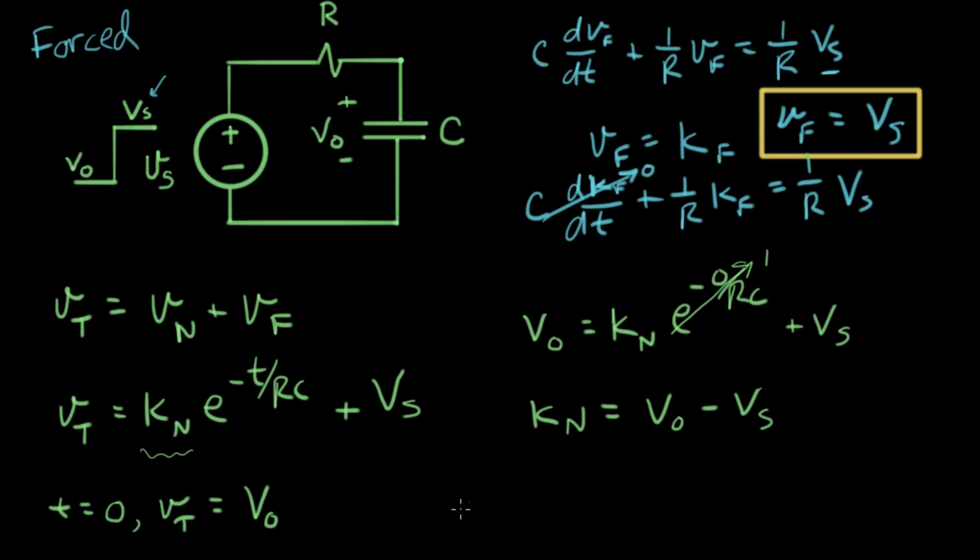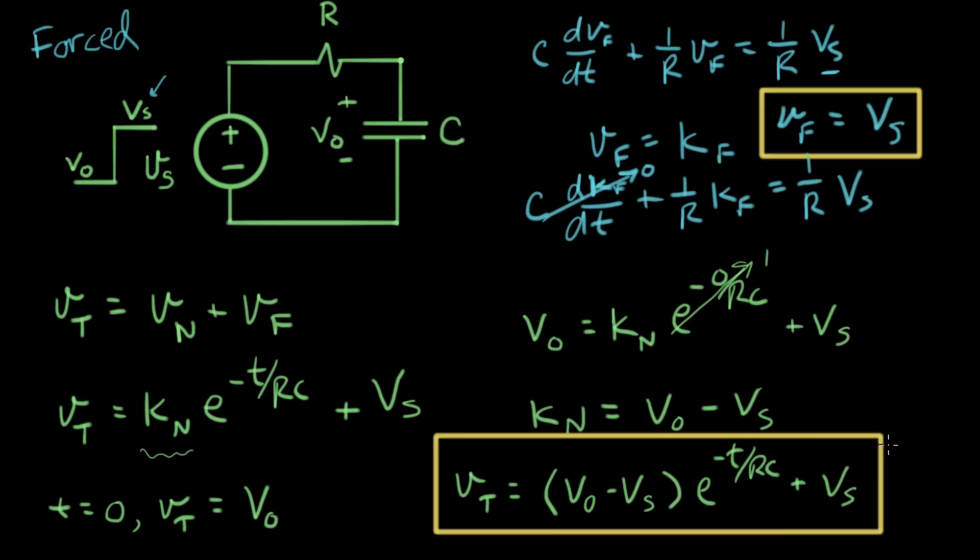Okay. And we can finish our total response. We can say the total response is VT equals K sub N, which is V naught minus VS, e to the minus t over RC, and plus VS. And that is the total response of our circuit.